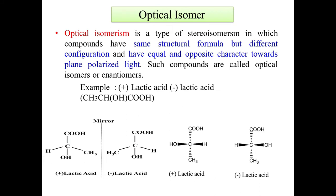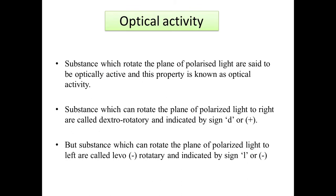What is optical isomerism? Optical isomerism is another branch of configurational isomerism. It is a type of stereoisomerism in which compounds have the same structural formula but different configurations and have equal and opposite effects toward plane-polarized light. Such compounds are called optical isomers or enantiomers. An example is (+)-lactic acid and (−)-lactic acid.